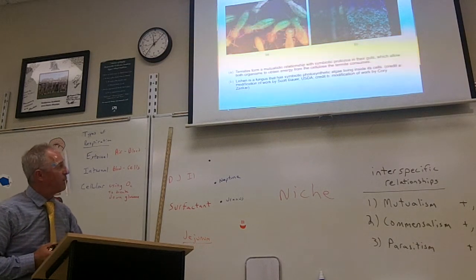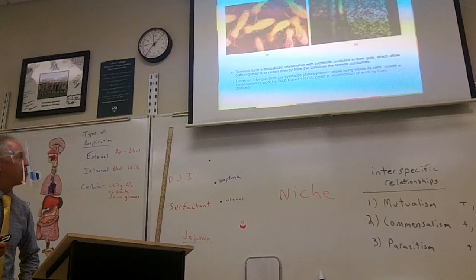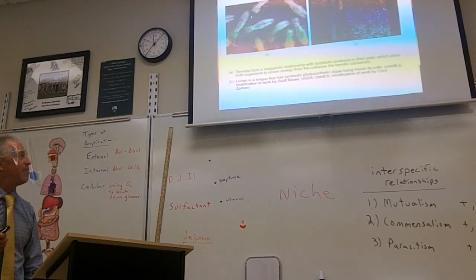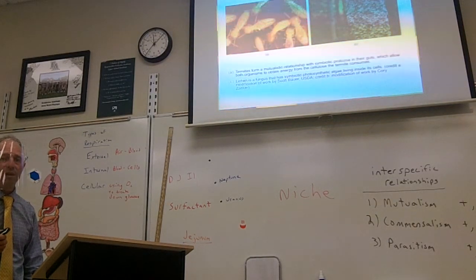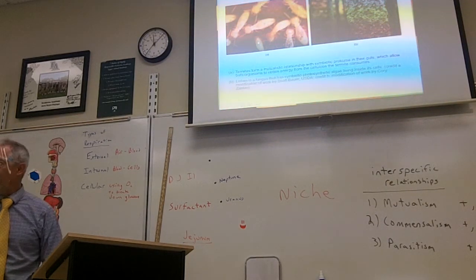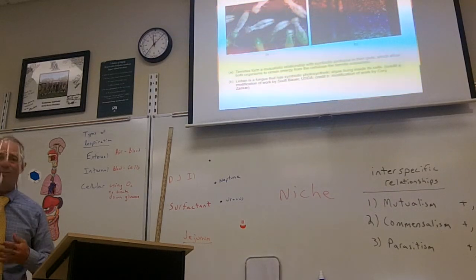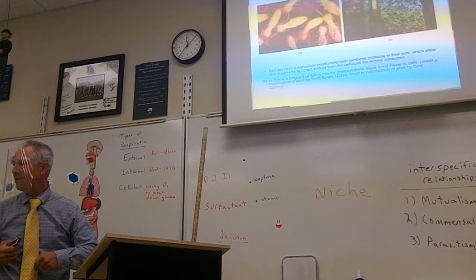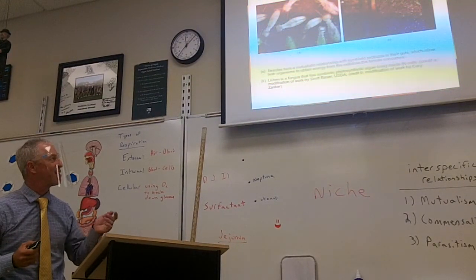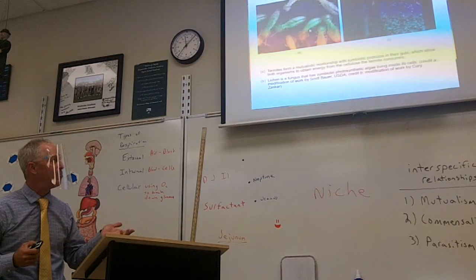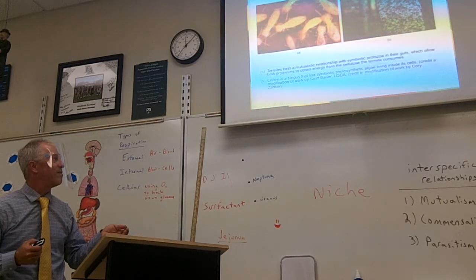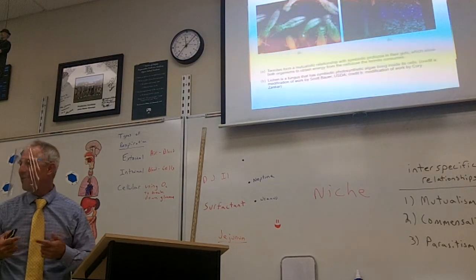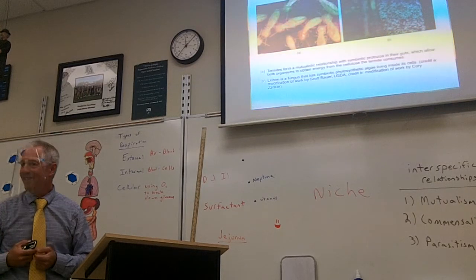What about mutualism? A mutualistic relationship in animals are the termites and the bacteria that live in their guts. Did y'all know termites can eat wood? The termite itself cannot digest the wood. It's the bacteria in the gut of the termite who digest the wood. So the bacteria gets food, wood, and gives some of the digested material to the termite. So they're helping one another.